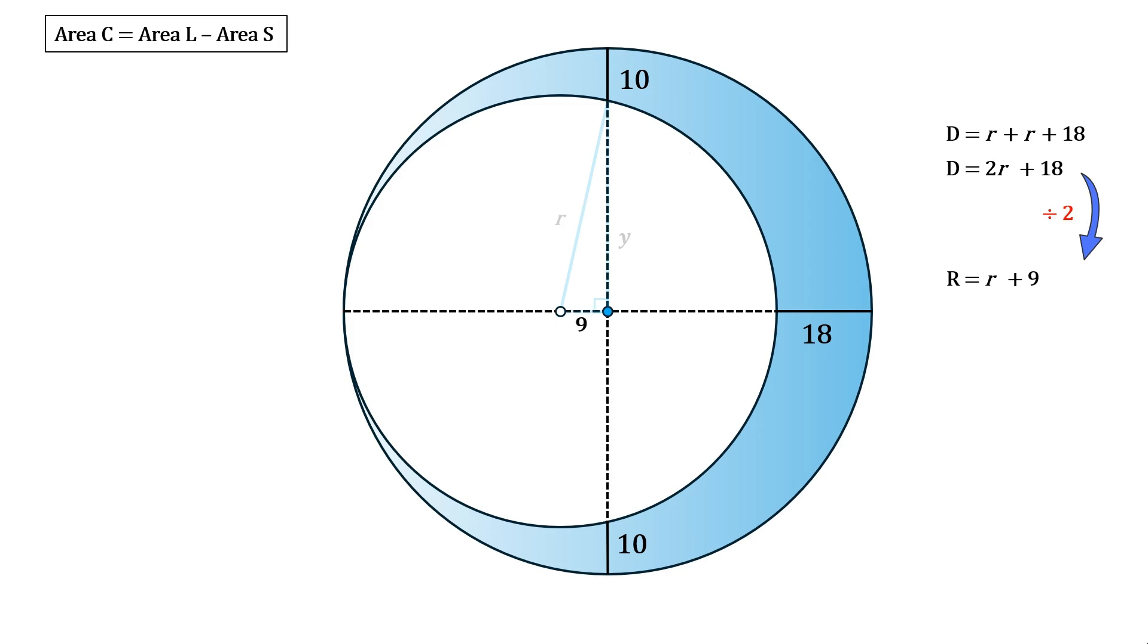Let's look at finding the value of y. We know that the length of the radius of the largest circle is r plus 9, so the value of y must be the length of the radius of the largest circle minus 10. This gives us the following equation which we can simplify to y equals r minus 1.